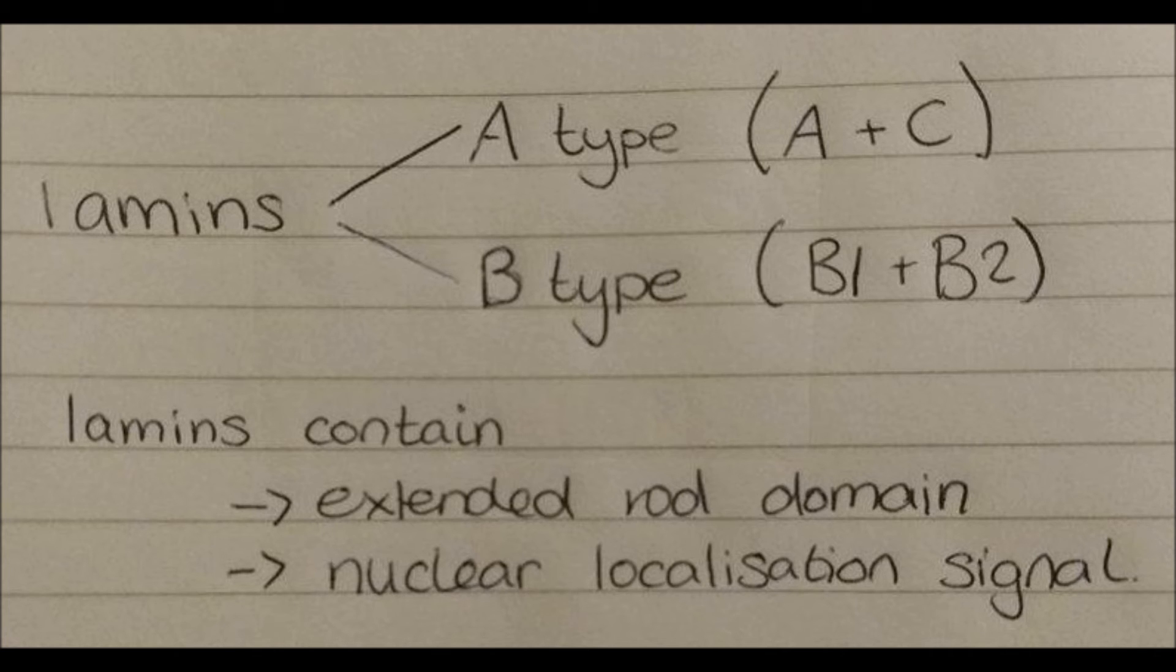These intermediate filaments can be categorised as either A type, which includes lamins proteins A and C, or B type, and furthermore they differ from cytoplasmic intermediate filaments in that they have an extended rod domain and all carry a nuclear localisation signal.